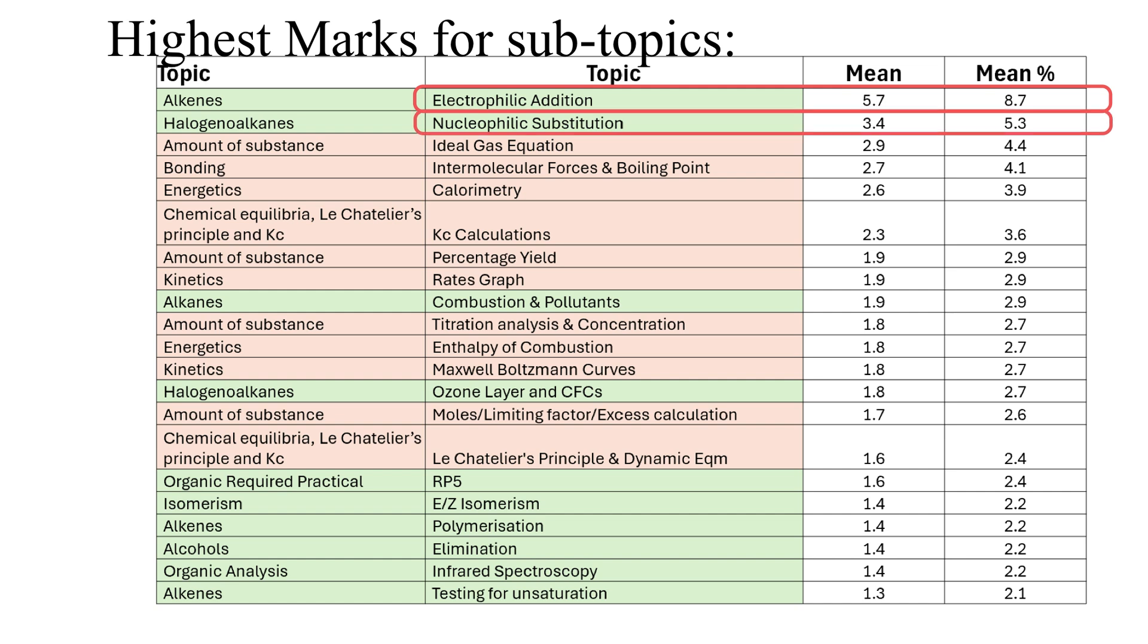And then in second place comes another mechanism nucleophilic substitution on average making up 5 percent of the paper with 3.4 marks each year on average. Then we hit a lot of physical chemistry subtopics, the ideal gas equation, intermolecular forces and boiling points and calorimetry.